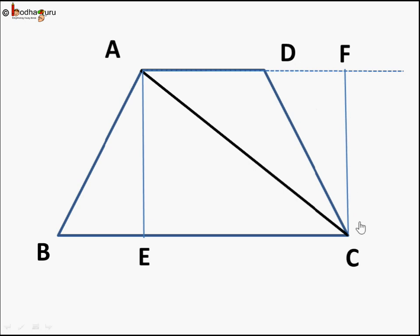But what do you observe? CF is same as AE, which is nothing but the height of trapezium. Height of the trapezium is the distance between the two parallel lines AD and BC. And it will remain same because both of these lines AD and BC are parallel. They will never meet. So the height of this trapezium is h which is same as here.